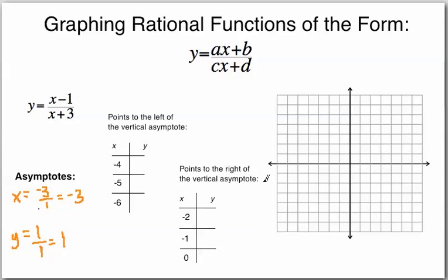The first thing we're going to do is plot those asymptotes on the graph. x equals negative 3 is the vertical line where x is negative 3, so we draw a dotted vertical line. Remember it's dotted because the asymptote isn't actually part of our graph — it's just guiding us as to how the graph of the function is going to look. Now we draw our horizontal asymptote at y equals positive 1. These are the lines that our graph is not going to cross; the graph will get really close to the asymptotes but never actually touch them.